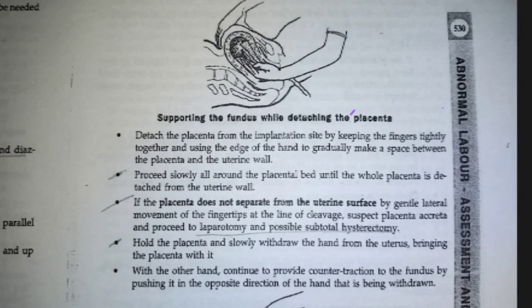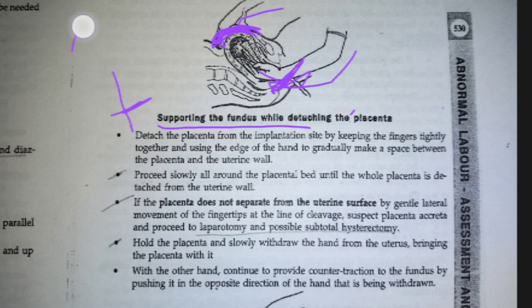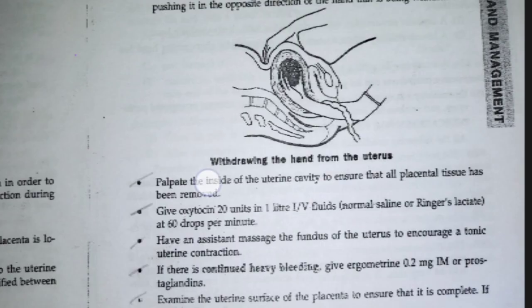The second method is removing the placenta with support at the fundus. The left hand is placed on top of the fundus, holding the uterus. The right hand enters as in the first method, moving laterally. They try to pull the placenta while applying force at the fundus. If the placenta is still not detaching, they use their fingertips to detach the edges of the placenta and then remove it.